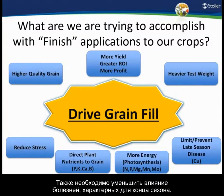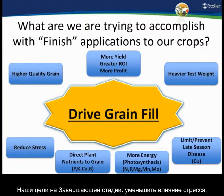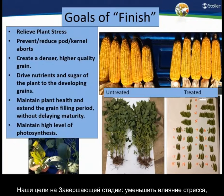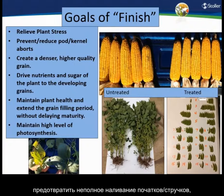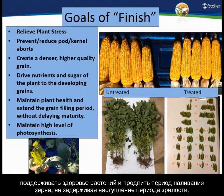We also want to limit or prevent late-season diseases, and copper is probably the micronutrient that can help here as much as any. Our goals of Finish are to prevent plant stress, reduce pod or kernel aborts, create denser higher-quality grain, drive nutrients and sugar from the plant to the developing grains, maintain plant health, and extend the grain filling period — without delaying maturity — while maintaining a higher level of photosynthesis.